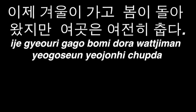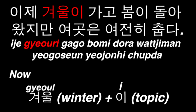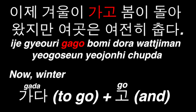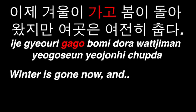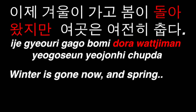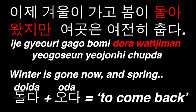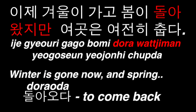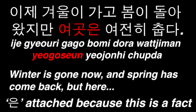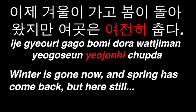Let's look at some example sentences. 이제 겨울이 가고 봄이 돌아왔지만 이것은 여전히 춥다. 이제 means 'now.' 겨울이 is 'winter' with the topic particle 이. 가고 is the verb 가다, 'to go,' with the suffix 고 meaning 'and,' so we can translate this clause as 'winter is gone now, and.' 봄이 is 'spring,' again with the topic particle. 돌아왔지만 combines 돌다, 'to spin,' with 오다, 'to come back,' plus 지만 meaning 'but.' 이것은 means 'this' with a subject particle — factual information. 여전히 means 'still,' and 춥다 means 'cold.' The full translation: 'Now winter is gone and spring has come back, but it is still cold.'